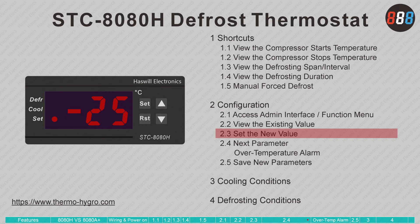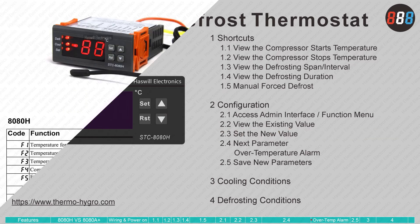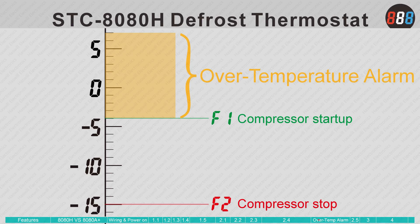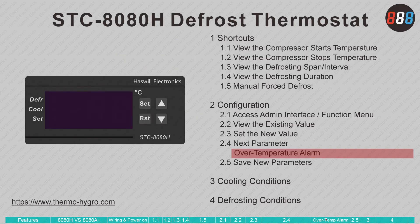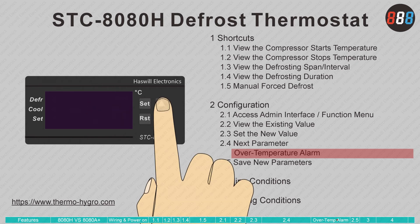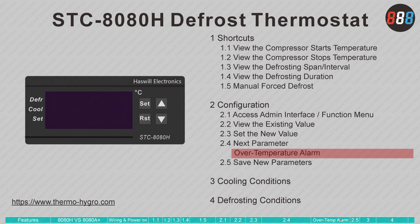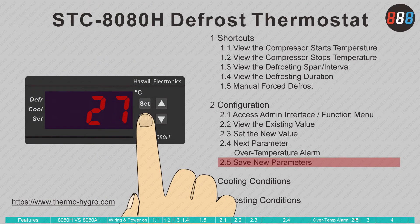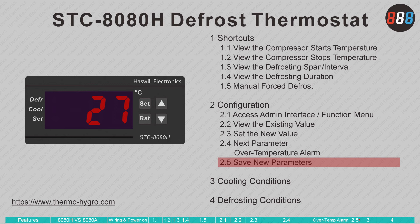Most parameters are straightforward, but note that the over-temperature alarm in the STC-8080 refers to how many degrees above F1 it is — not the absolute temperature at which the alarm occurs. When the over-temperature alarm triggers, the device sounds an alert and the reading flashes on the display. You can press any key to stop the sound, but the reading will not stop flashing until the room sensor temperature returns to the safe range. After configuring all menus, press the RST key to save and return to normal state.